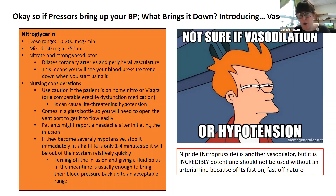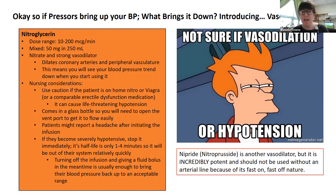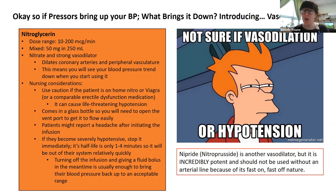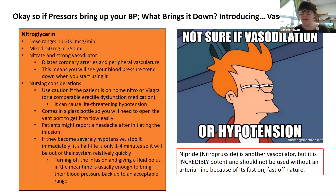Nitroprusside is very different from nitroglycerin — it's an extremely potent vasodilator. It's really not something you want to use without an arterial line because its onset and offset are both extremely rapid, making it very difficult to safely titrate with just a peripheral blood pressure cuff. Nitroglycerin does such a nice job getting pressure down that nitroprusside is not something we'd routinely use.